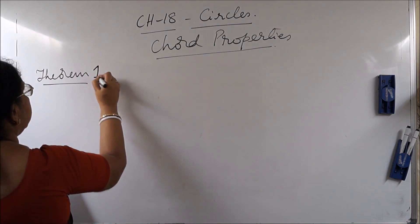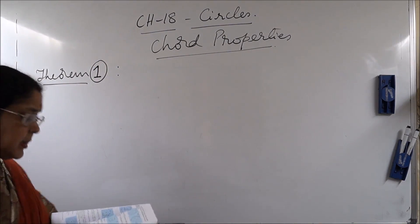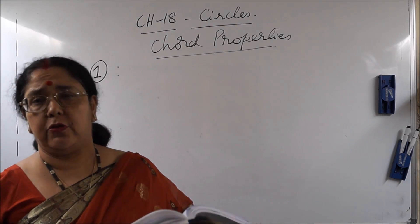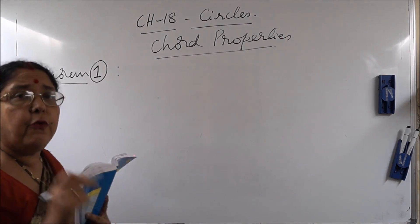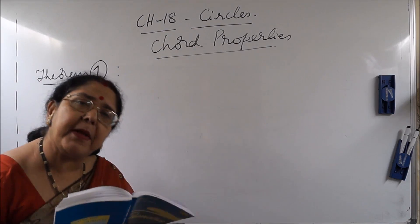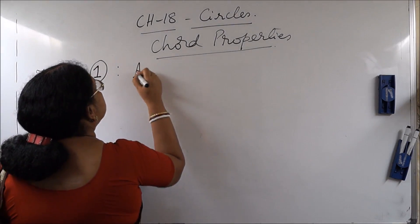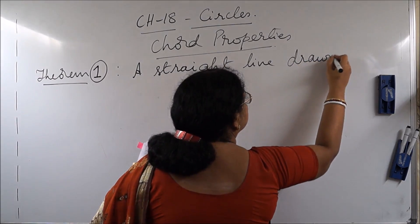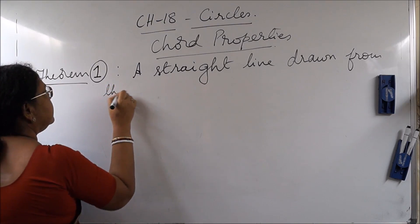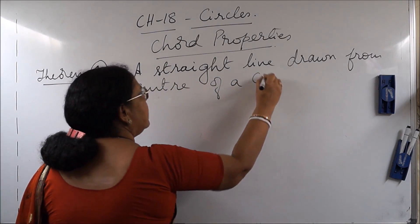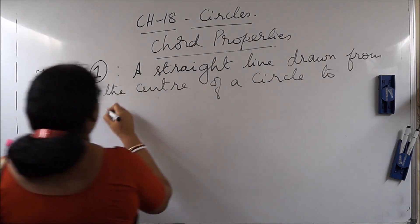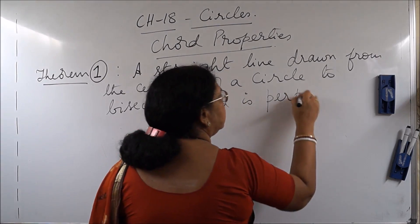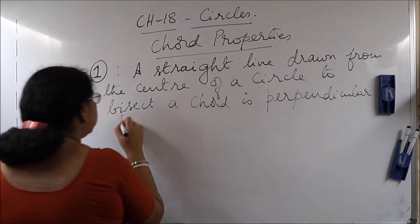Theorem 1 — and as I am again mentioning, this number is not fixed. The statement is: a straight line drawn from the center of a circle bisecting a chord is perpendicular to the chord. Let me repeat: a straight line drawn from the center of a circle to bisect a chord is perpendicular to the chord.